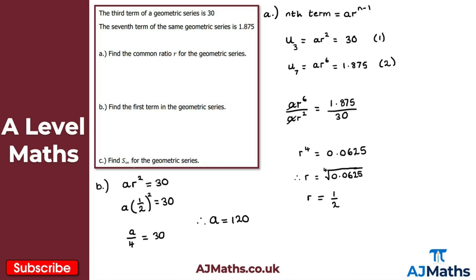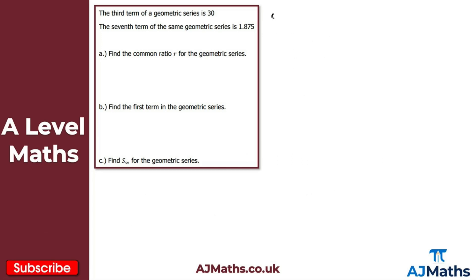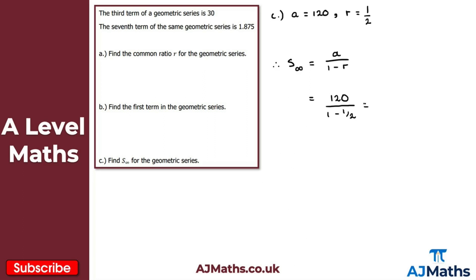For part C, we have to find the sum to infinity. Noting that A equals 120 and R equals a half, we recall the formula: sum to infinity equals A over 1 minus R. Substituting gives 120 over 1 minus a half, which is 120 over a half. Dividing by a half is the same as multiplying by 2, so this equals 120 times 2, giving us 240.